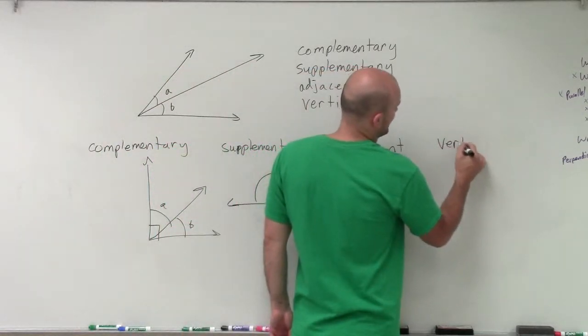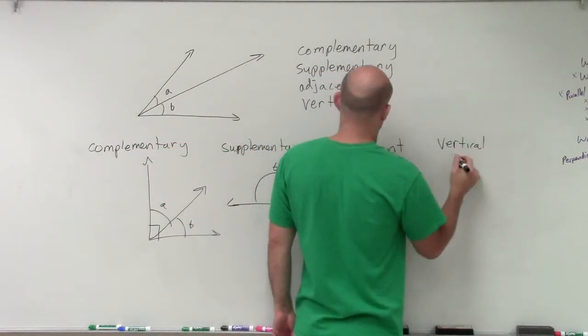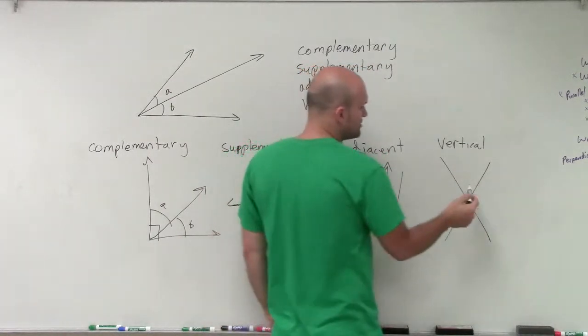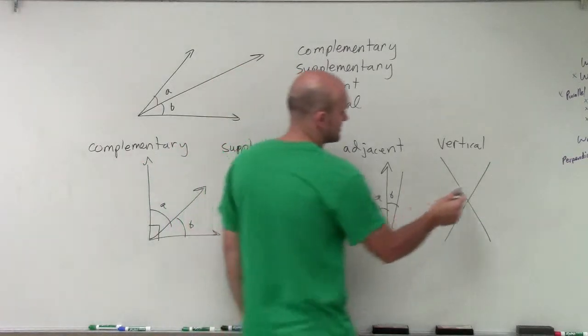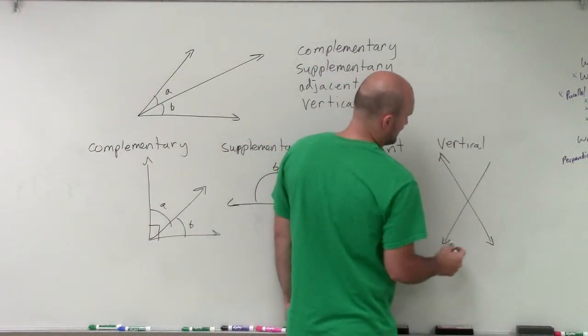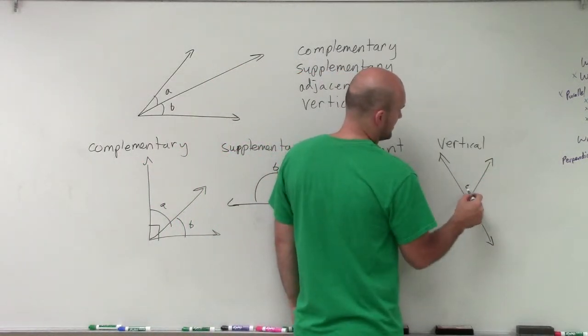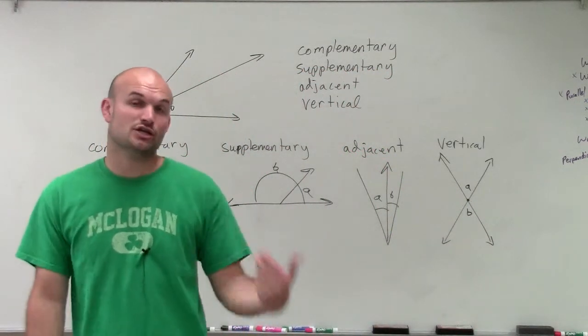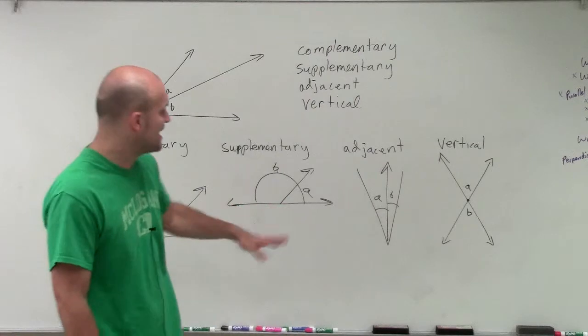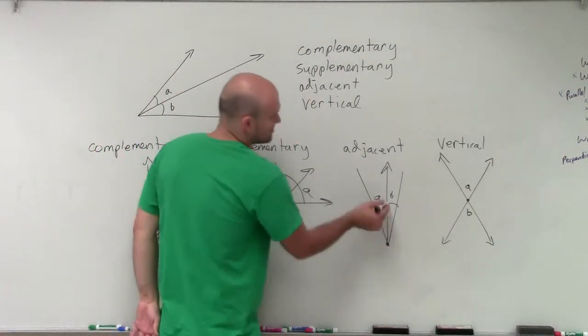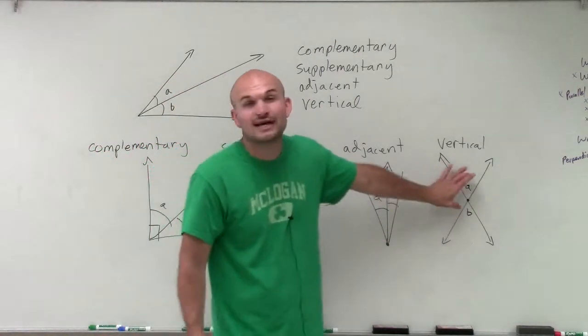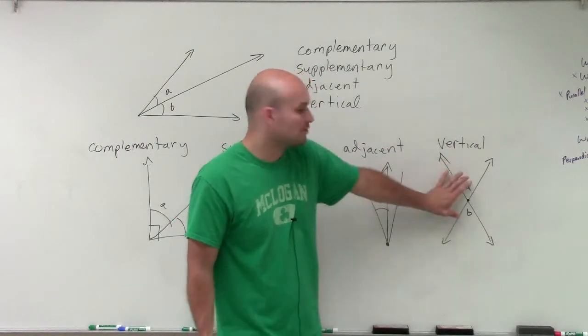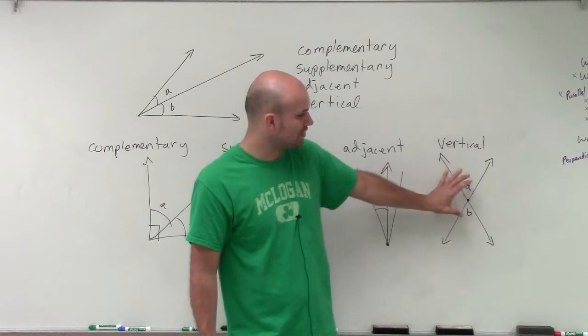And then let's look at vertical angles. Vertical angles are going to be angles that share a vertex. So let's see, we have an intersection here, and let's say I have A and B. Now vertical angles, they're going to share a vertex, but they're not going to share a side. Where adjacent angles share a vertex and also share a side, vertical angles are going to be opposite of each other, and they're also going to be equal in measure. So vertical angles are equal in measure.